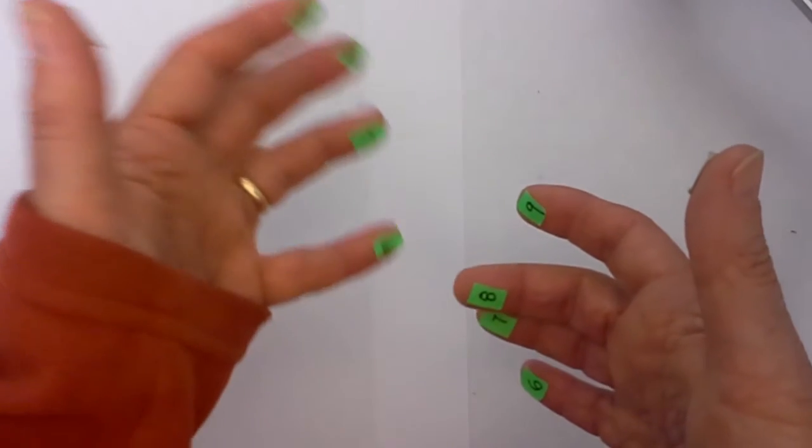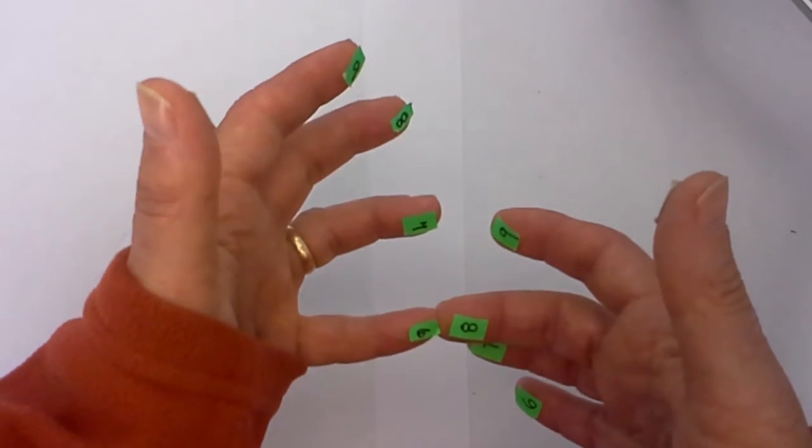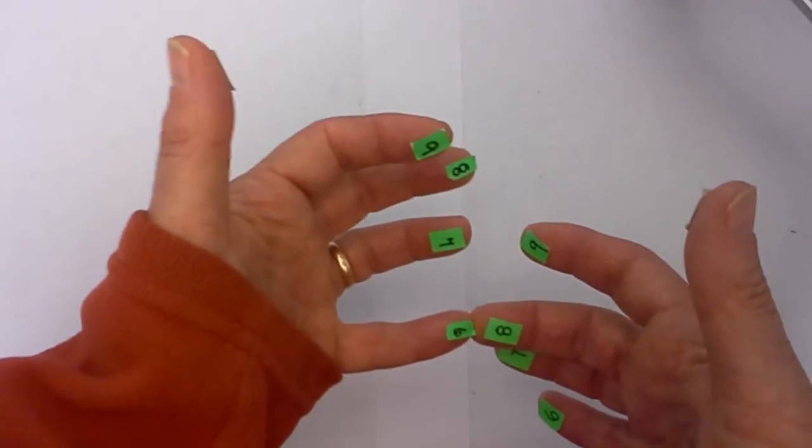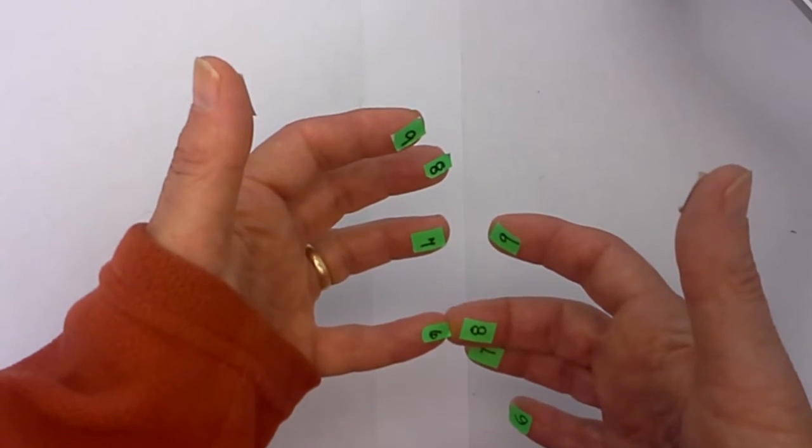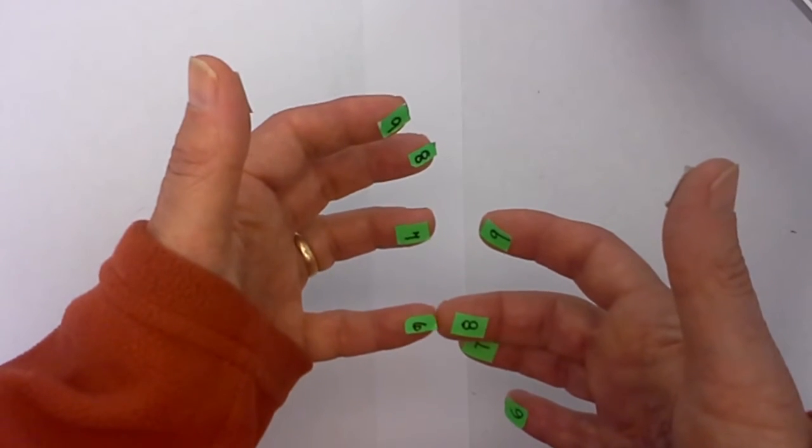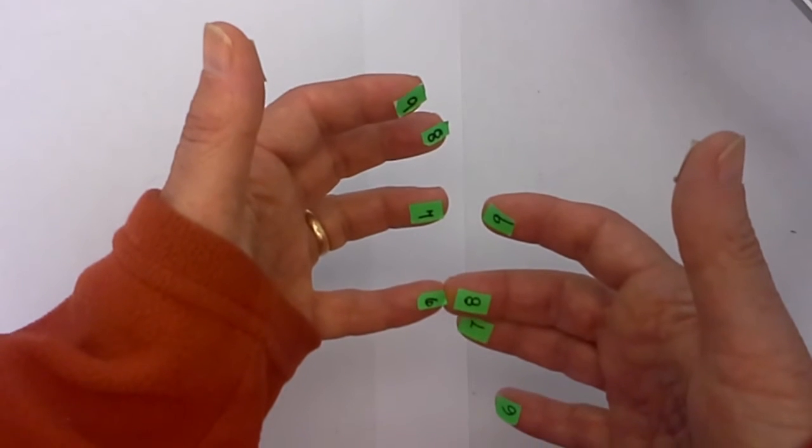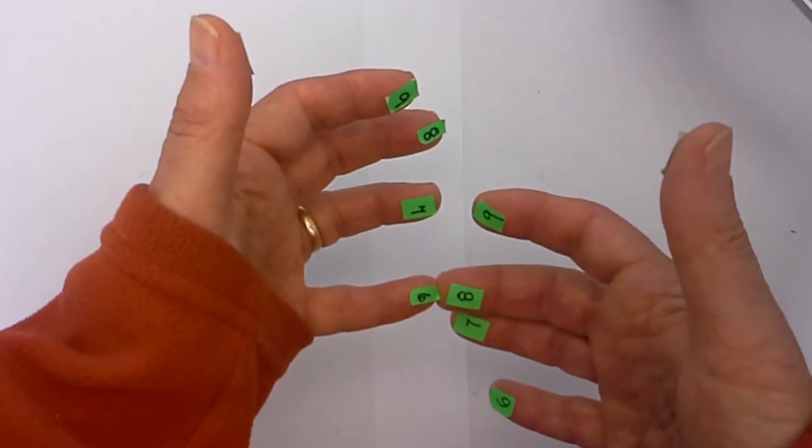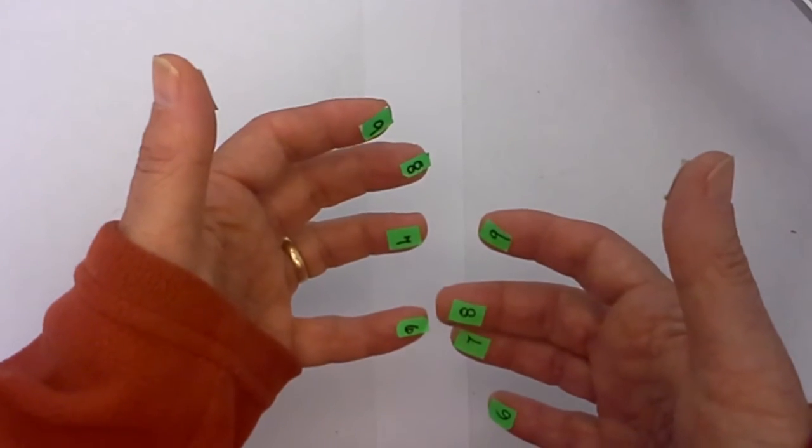How about 6 times 8? I'll pick up the pace a little bit. I touch the 6 to the 8. I have 4 above on one side times 2 on the other, which is 8. Then I have 4 fingers touching or below, so that would be 40 plus 8 is 48.